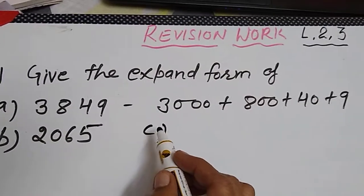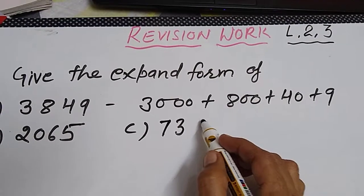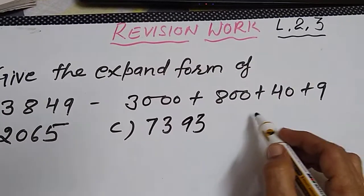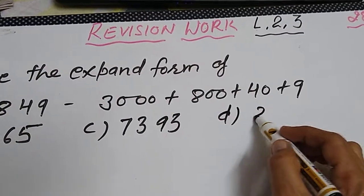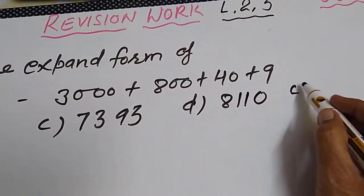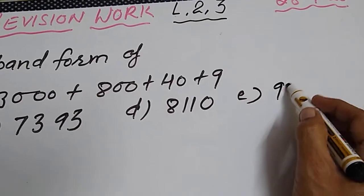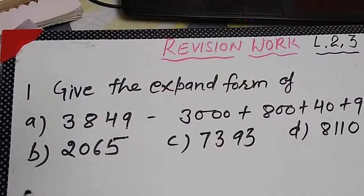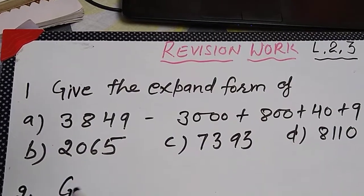Now B: 2065. I am writing here. C: 7393, D: 8110, and E: 9008. Now question number 2: give the numeral for...